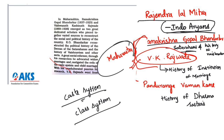Another scholar, Pandurang Vaman Kane, was a great Sanskrit scholar dedicated to social reforms. He continued the earlier tradition of scholarship and his monumental work was a book called History of the Dharmashastra, published in five volumes. It is now considered an encyclopedia of ancient social laws and customs, which enabled people to make a case for social progress in ancient India.